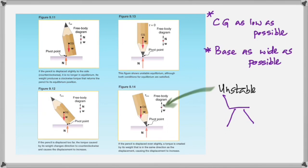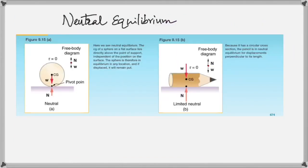To summarize stability: number one, center of gravity as low as possible; number two, the base as wide as possible. There is also a third state called neutral equilibrium, where the object is in equilibrium at any position. For example, a spherical ball on a horizontal surface is in neutral equilibrium at all positions. Similarly, a pencil placed on its side has the vertical line through the center of gravity always inside the base — neutral equilibrium.